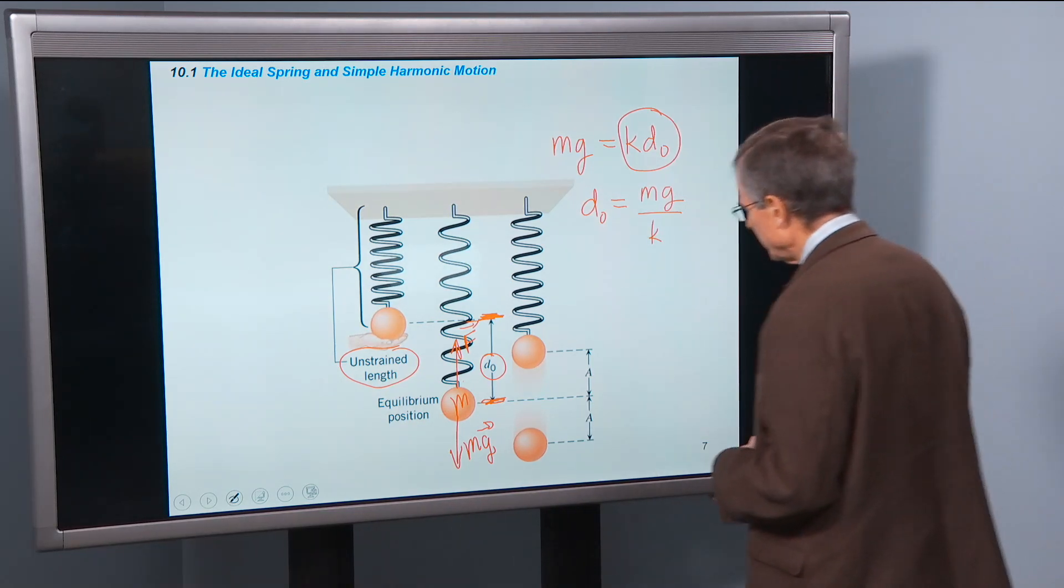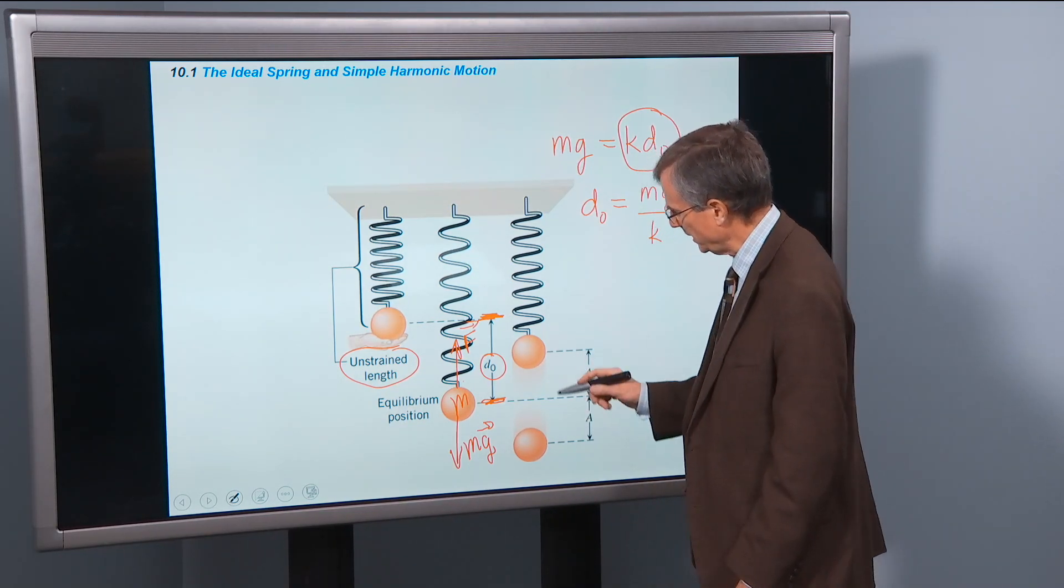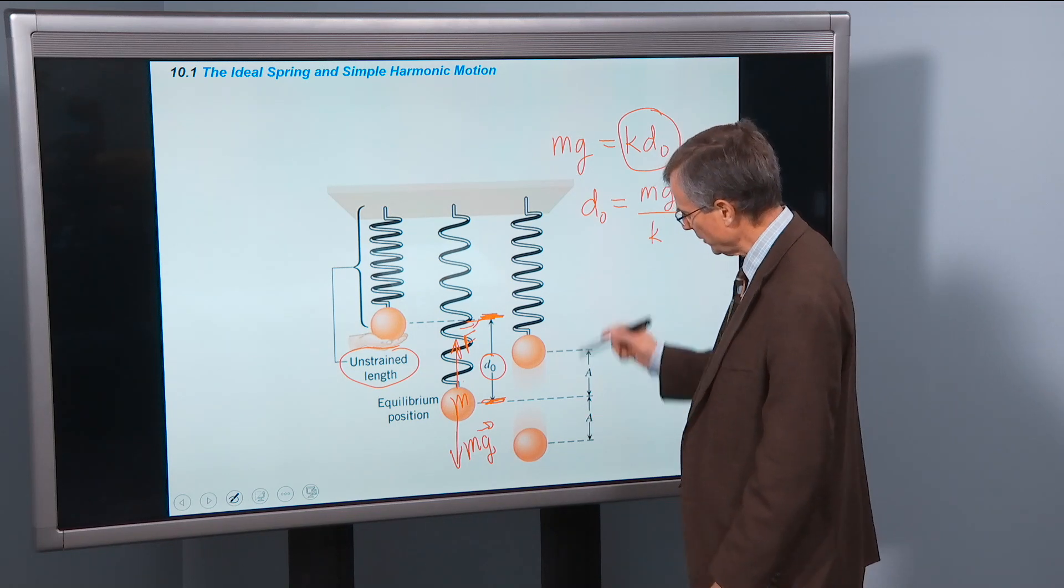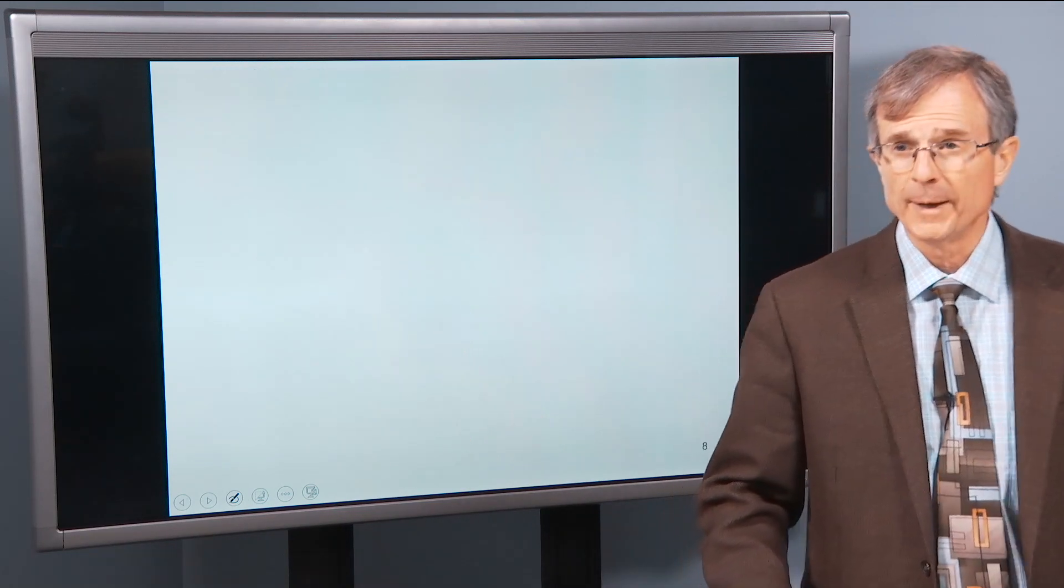Then if you want to oscillate this spring, it's going to, or this mass on a spring, it's going to go back and forth like this. We'll talk about that right now.